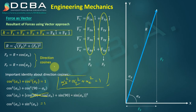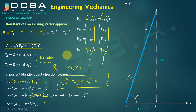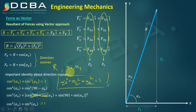If we know the resultant R and two angles alpha_x and alpha_y, we can first find alpha_z using the direction cosine identity. Then we can find the three components: Fx equals R·cos(alpha_x), Fy equals R·cos(alpha_y), and Fz equals R·cos(alpha_z). So we can find all three components of the resultant.